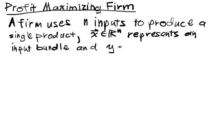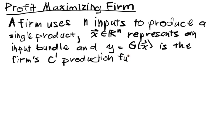And let's say y equals g of x is the firm's C¹ production function. That is, if I have this input bundle, then this is exactly how much I can make, how many units I can make of wheat checks. And I'm going to assume that it's C¹, and typically it should be C¹. And if it's not C¹, then we can approximate it by a C¹ function.